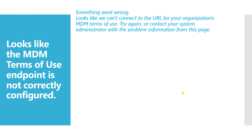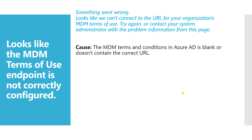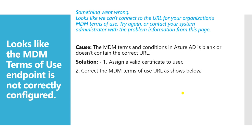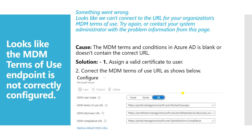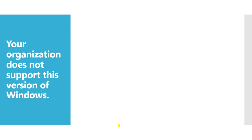The next error is 'MDM terms of use endpoint not correctly configured.' The message says it cannot connect to your organization's MDM terms of use URL. The cause is that the MDM terms and conditions URL in Azure AD is blank or contains an incorrect URL. The fix is to assign a valid certificate to the user, then correct the MDM URL. On the device enrollment page, use the 'Restore Default MDM URL' option and save the setting.